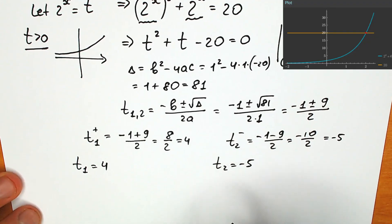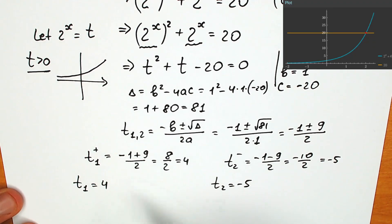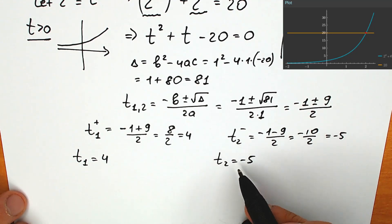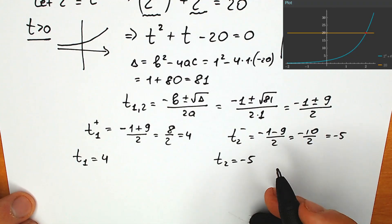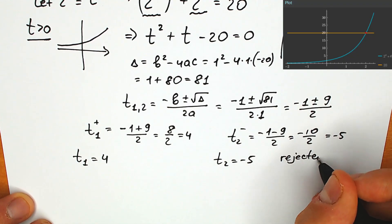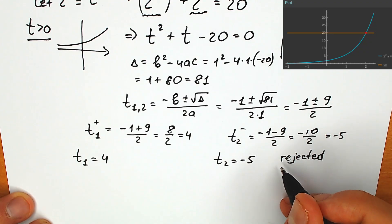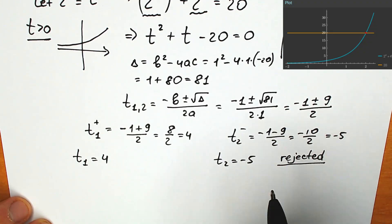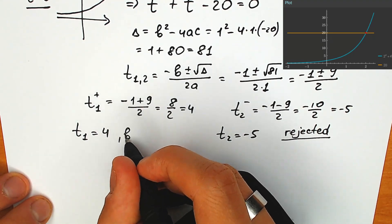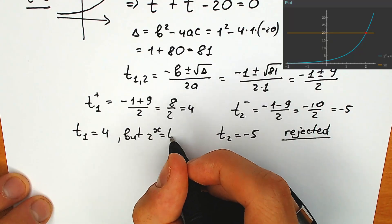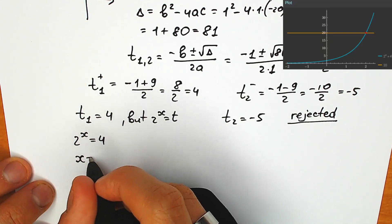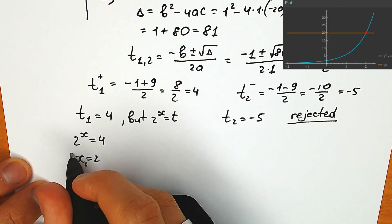One really important moment: as I said before, t needs to be positive. So if we're talking about real number roots, we reject t equals minus 5. If we're talking about school-level math, we can easily reject this minus 5. So t₁ equals 4, and since 2 to the x equals t, we have 2 to the x equals 4, which gives us x₁ equals 2.